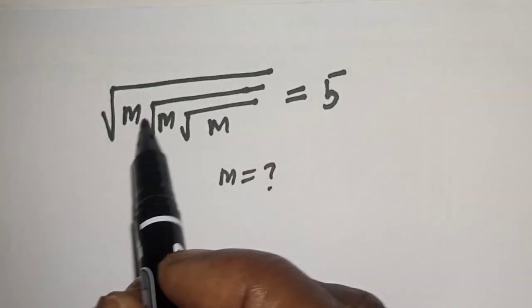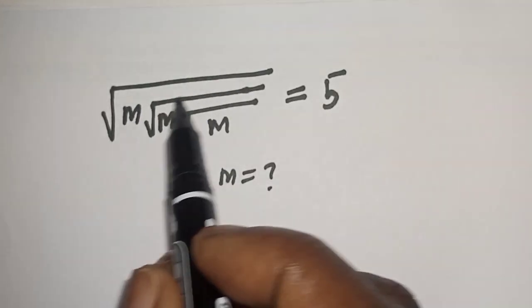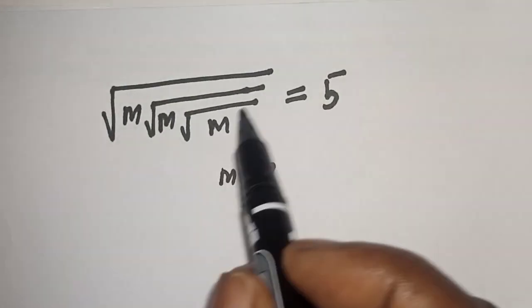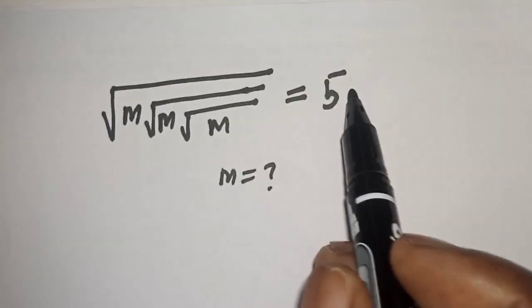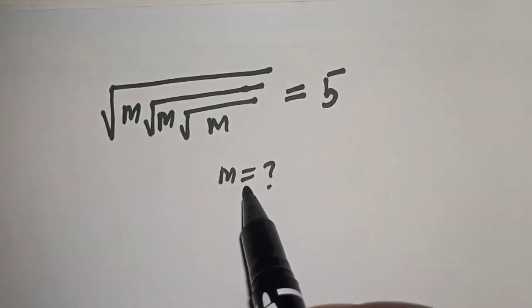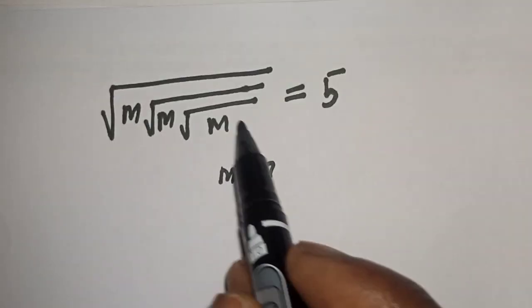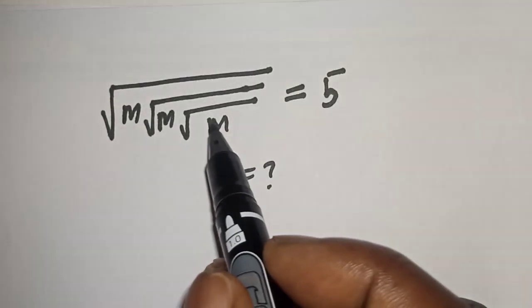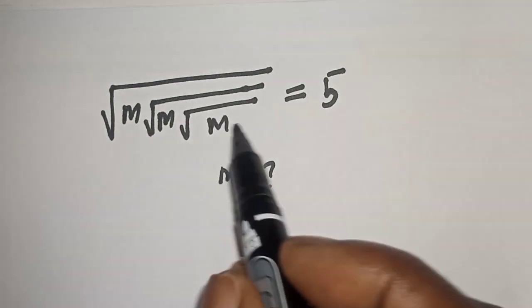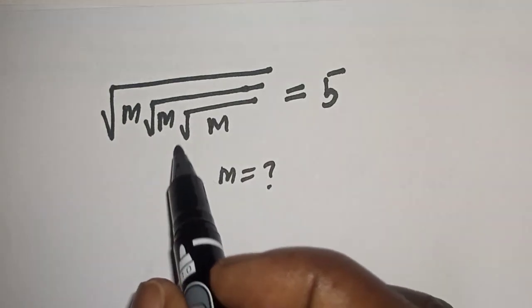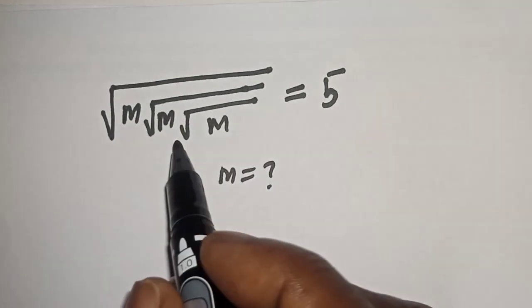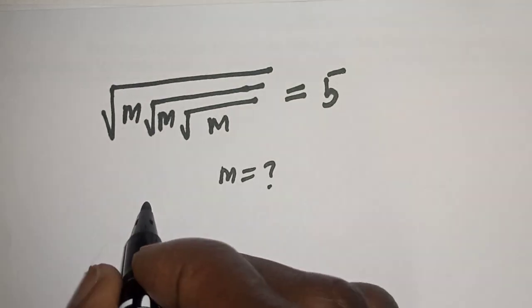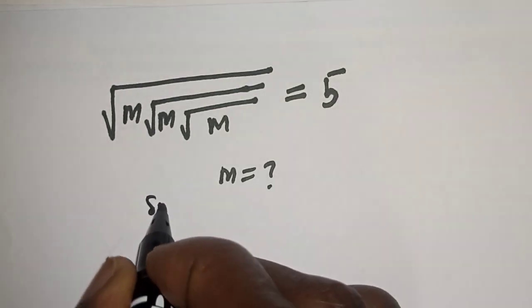Square root of m times square root of m is equal to 5. What is the value of m? Welcome to my class. In this class we want to find the value of m from this math problem. Before we proceed, please don't forget to like, share, comment and subscribe.